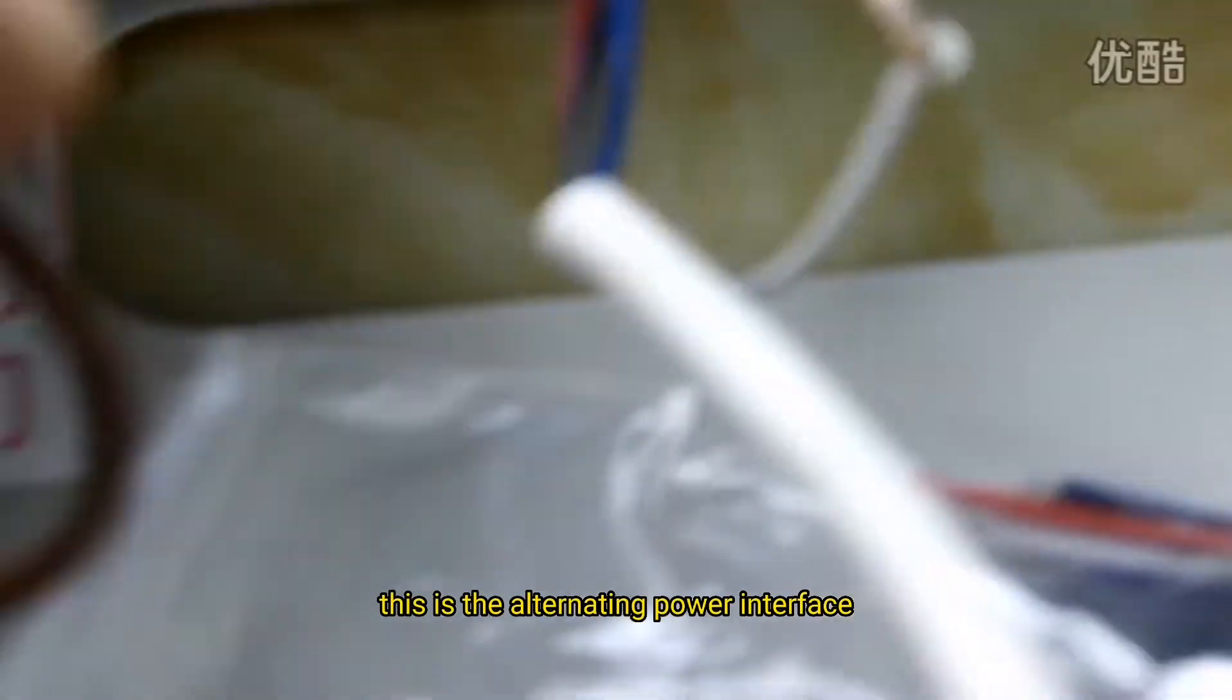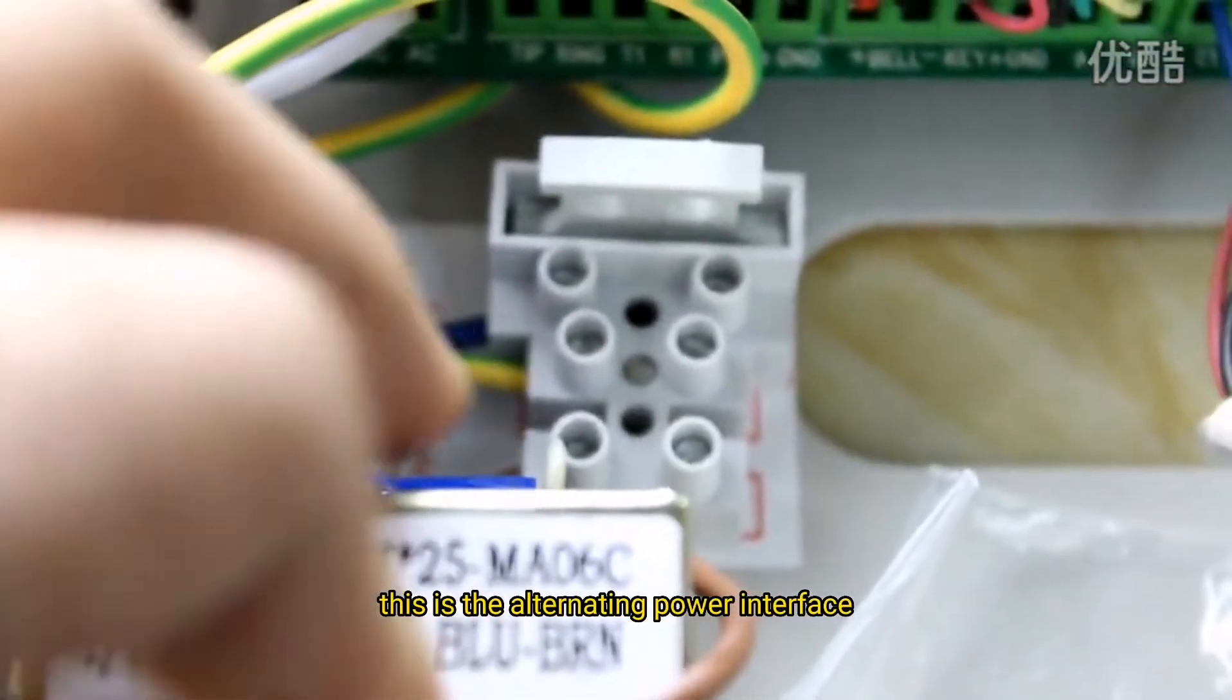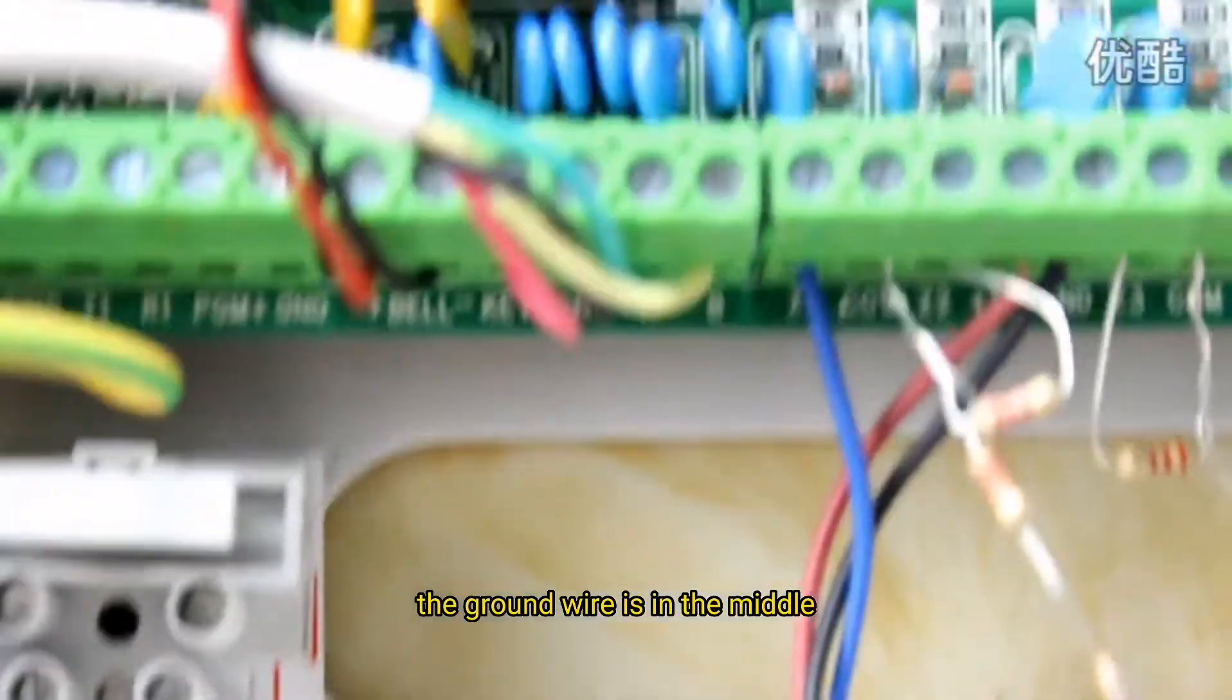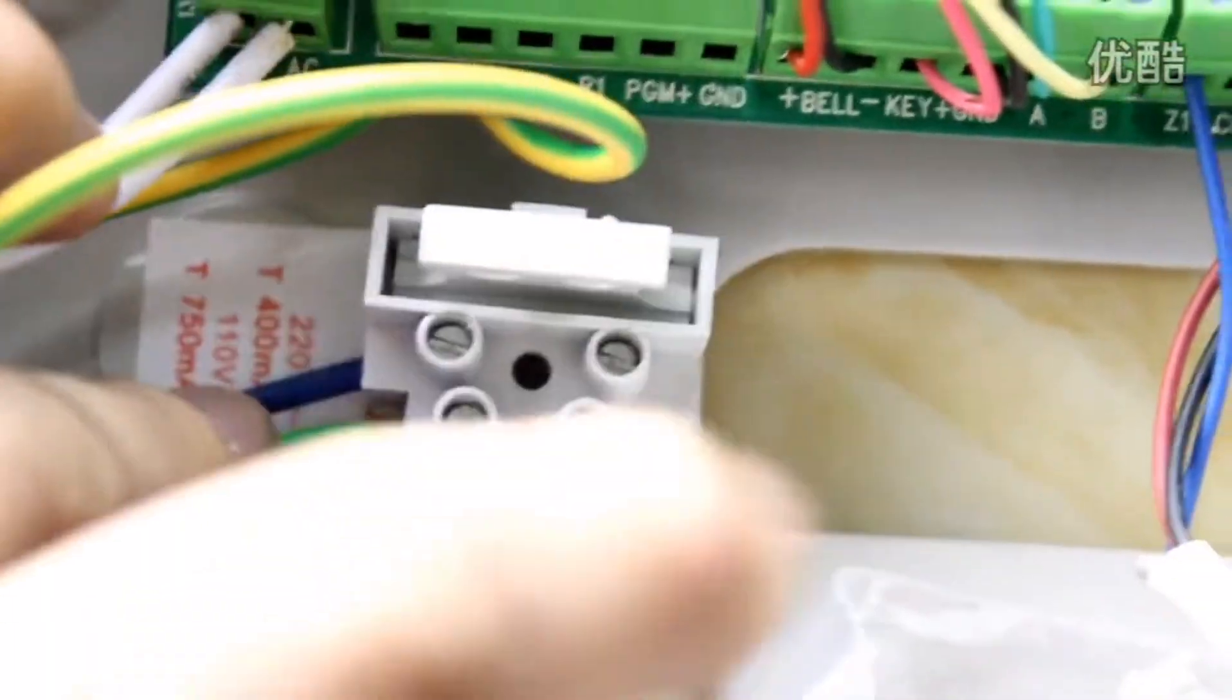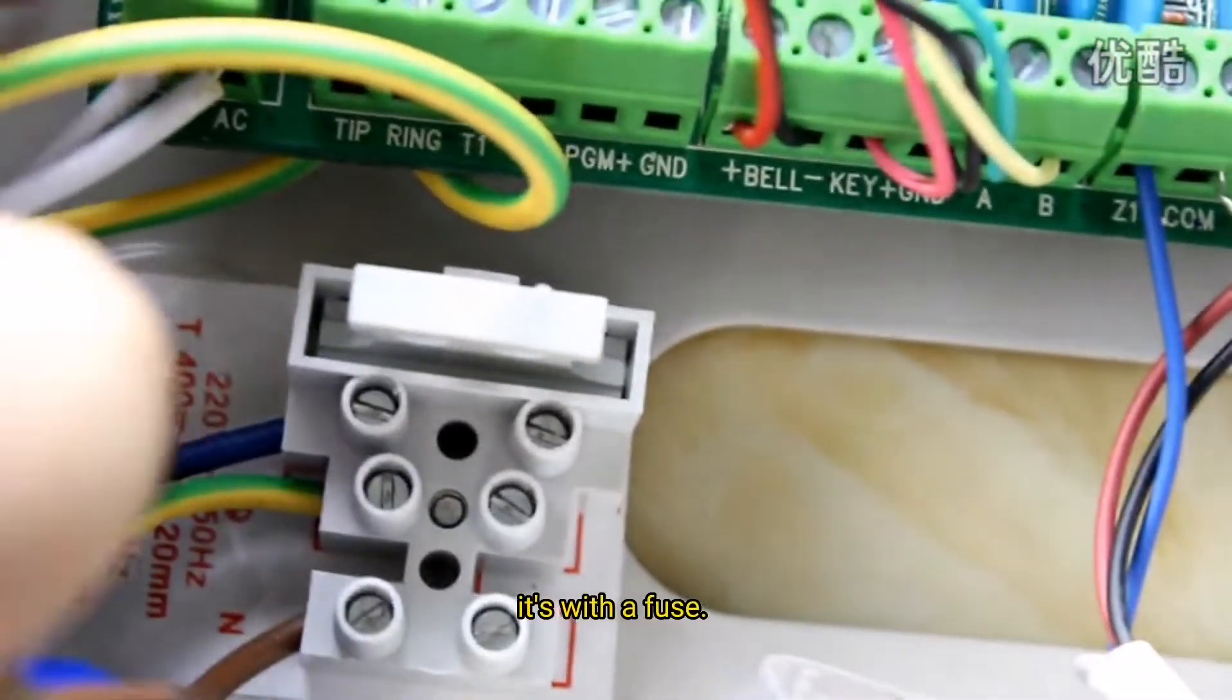This is the alternating power interface. The GND wire is in the middle. It's with a fuse.